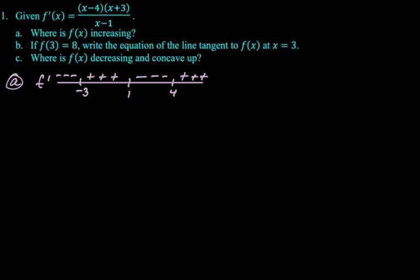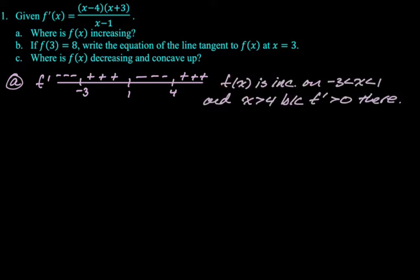So we're looking for increasing. So you can see you're increasing between negative 3 and 1 and also for x greater than 4, so let's write that down. Increasing negative 3 to 1 and x greater than 4 because f prime is greater than 0 there. I think that's a good answer.